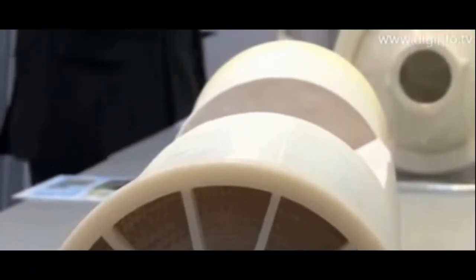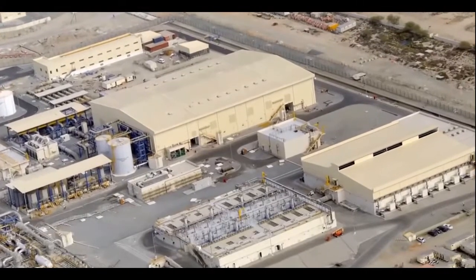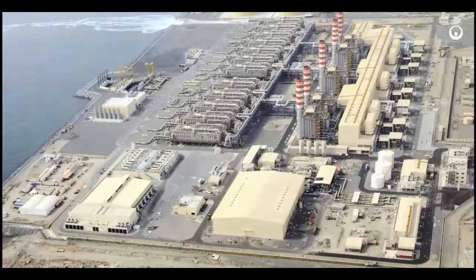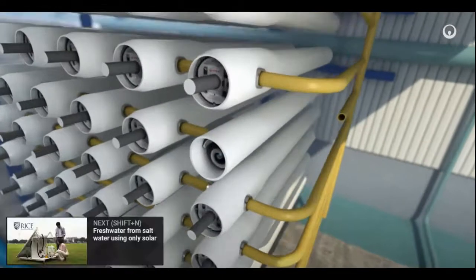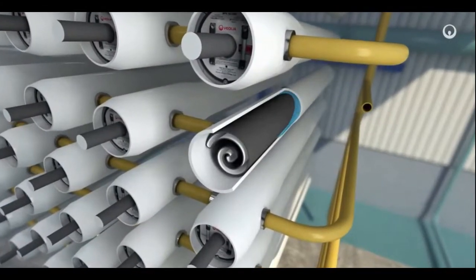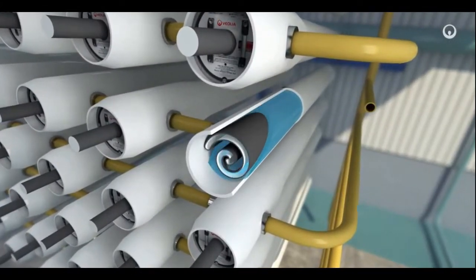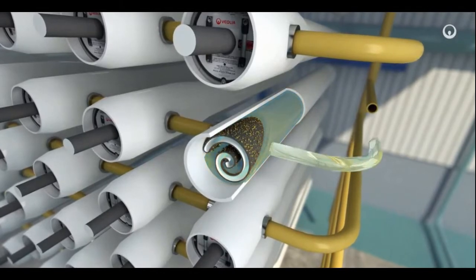Around the same time these first plants were built, researchers created the reverse osmosis membrane. And by the mid-60s, the first reverse osmosis desalination plant had opened. In reverse osmosis, pressurized seawater flows over a membrane that allows the water to flow through but catches the salt.